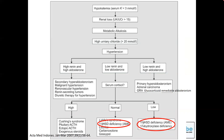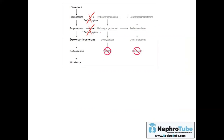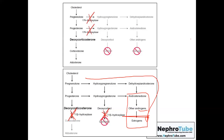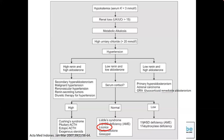Regarding enzyme deficiencies affecting potassium: if there is 17-alpha hydroxylase deficiency, the pathway breaks, causing deficiency of cortisol and estrogen, while the arm continues toward aldosterone — causing high aldosterone and hypokalemia. In 11-beta hydroxylase deficiency, there is reduced formation of cortisol and aldosterone, and the pathway shifts toward androgens and androstenedione. These compounds in high levels have significant mineralocorticoid effects, also causing hypokalemia.